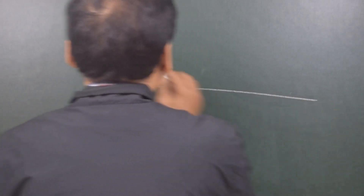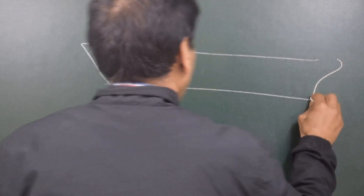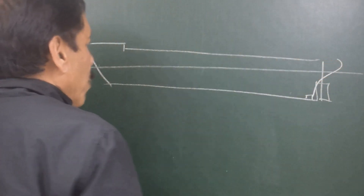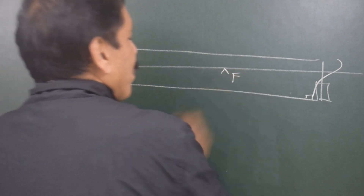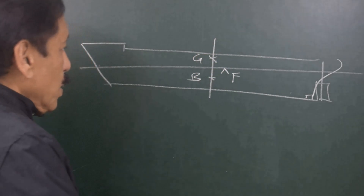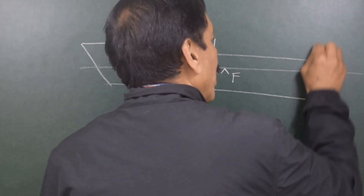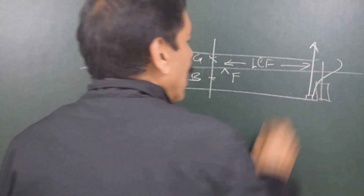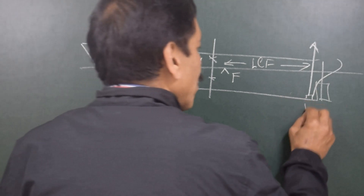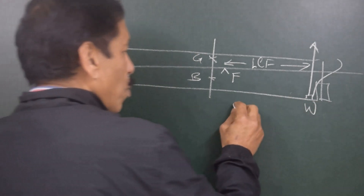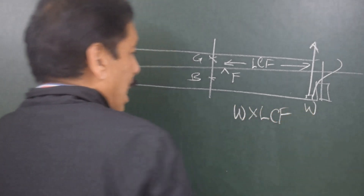Let us consider what happens when we discharge the weight from an after part. Here is the ship — we want to discharge a weight from a position very close to the aft perpendicular. The vessel is in an equilibrium position whereby the center of gravity and center of buoyancy are in a vertical line perpendicular to the water line. When we discharge the weight from here, there is a lever approximately equal to LCF, and that lever multiplied by the weight discharged creates a trimming moment called W × LCF.